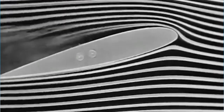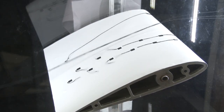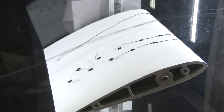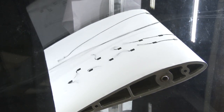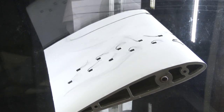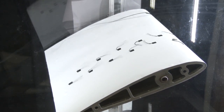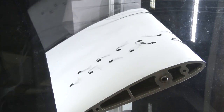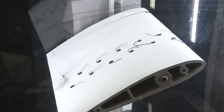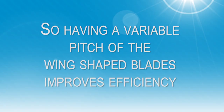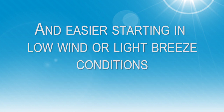Too steep an angle causes the air to separate from the wing and create turbulence and a drag or braking force. In aircraft, this results in reduced lift, potentially causing the aircraft to fall. For wind turbines, it results in very inefficient operation or stopping altogether. Having a variable pitch of the wing-shaped blades improves efficiency over a fixed blade system.